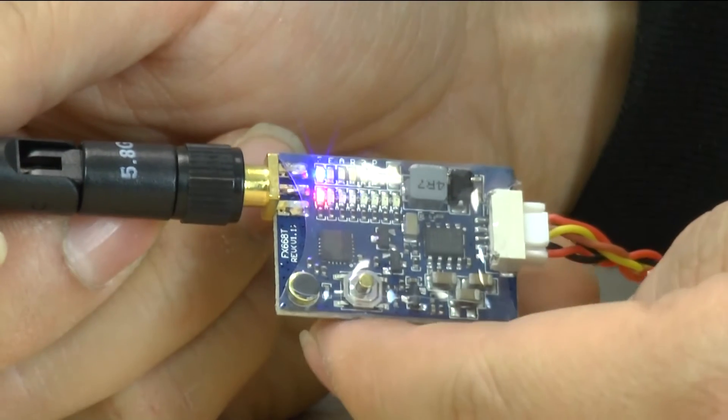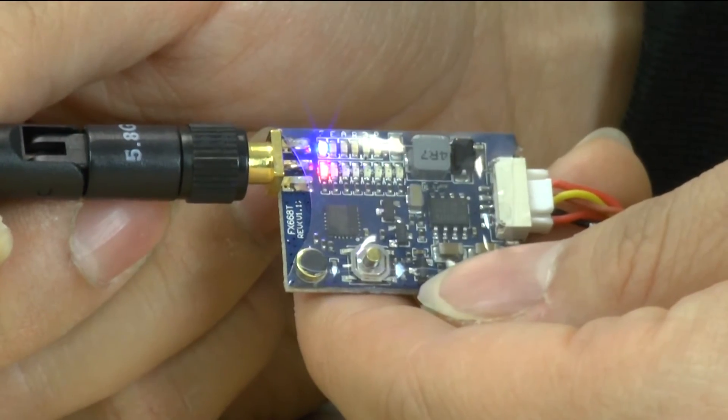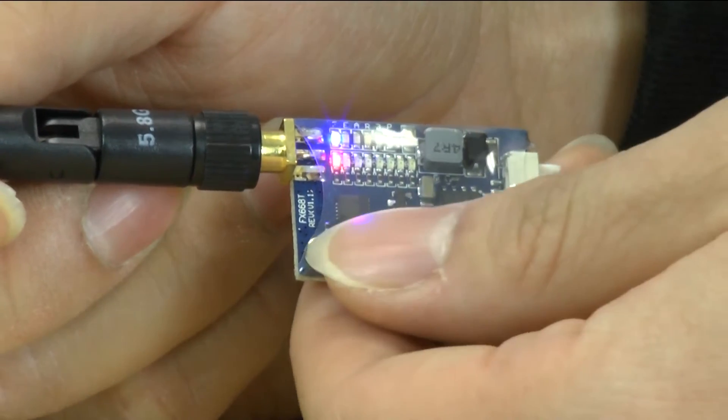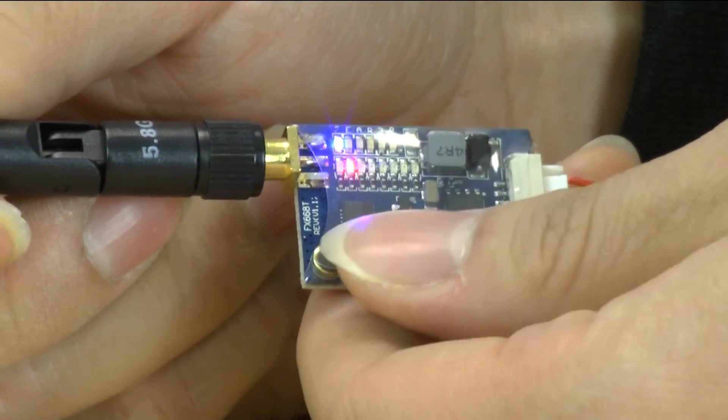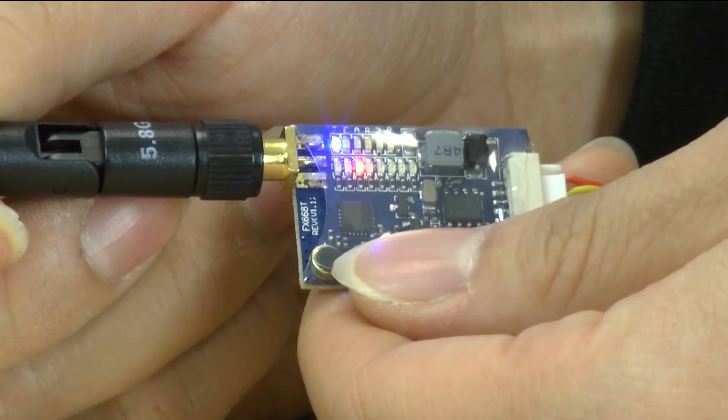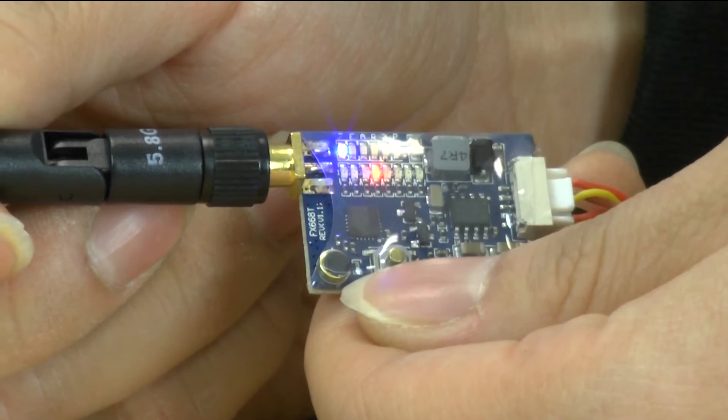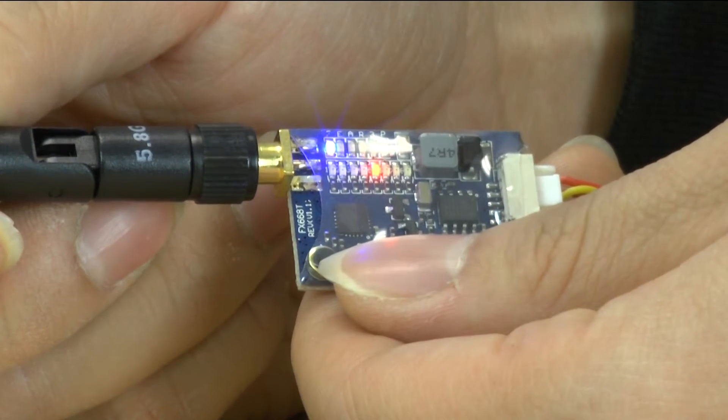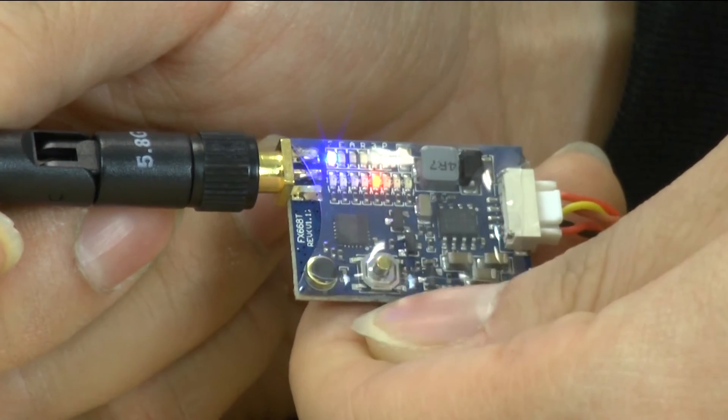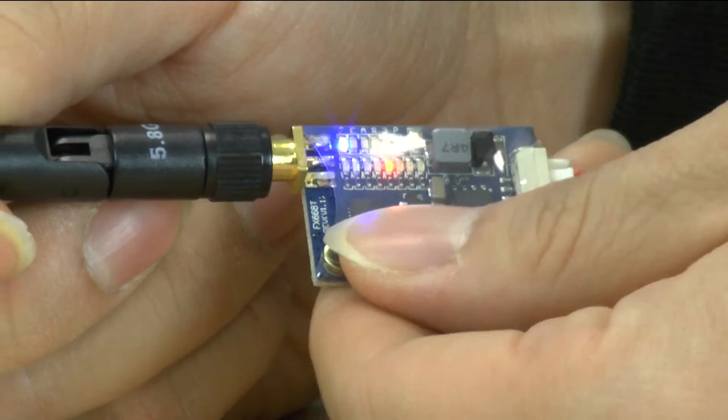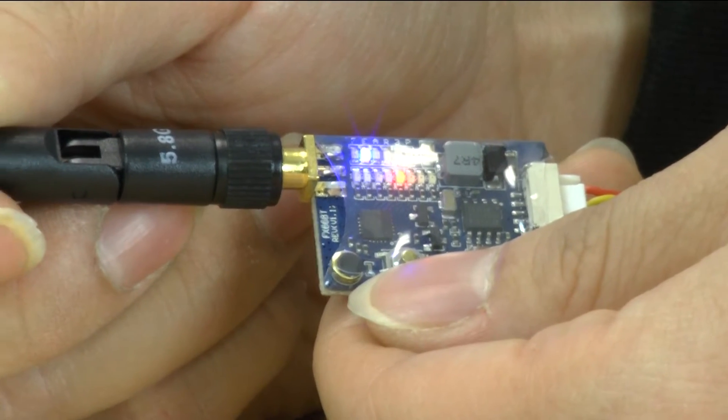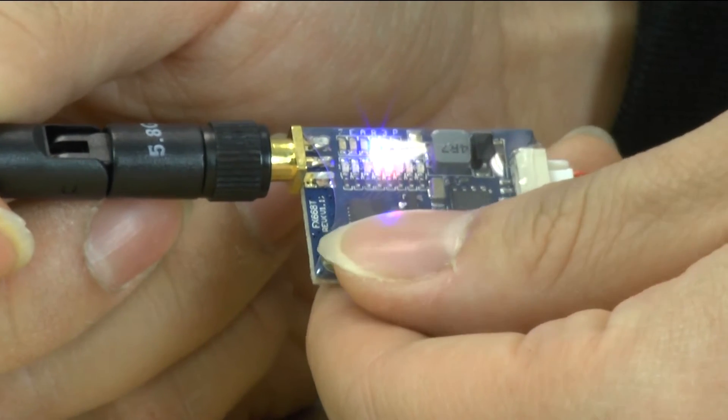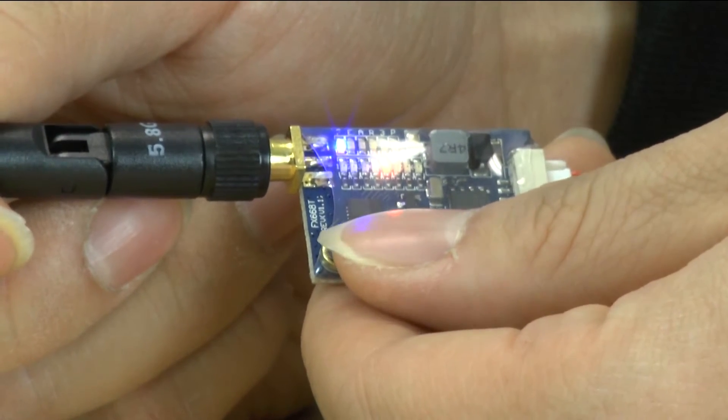So unlike the other VTX in order to change channels and bands the button combinations have changed. It's still one press to change the channel. So just go ahead and one quick click which will let you go through all the channels. If you want to change bands you're going to have to hit the button twice and then this will allow you to change the band that you're on. So pretty simple once you remember it.